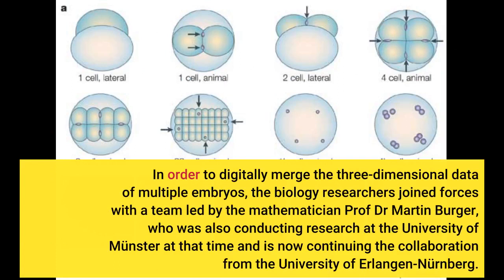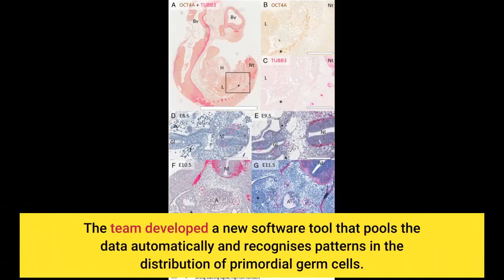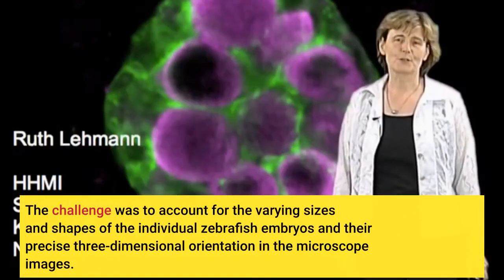The biology researchers joined forces with a team led by mathematician Professor Dr. Martin Berger, who was also conducting research at the University of Münster at that time. The team developed a new software tool that pools the data automatically and recognizes patterns in the distribution of primordial germ cells. The challenge was to account for the varying sizes and shapes of the individual zebrafish embryos and their precise three-dimensional orientation in the microscope images.